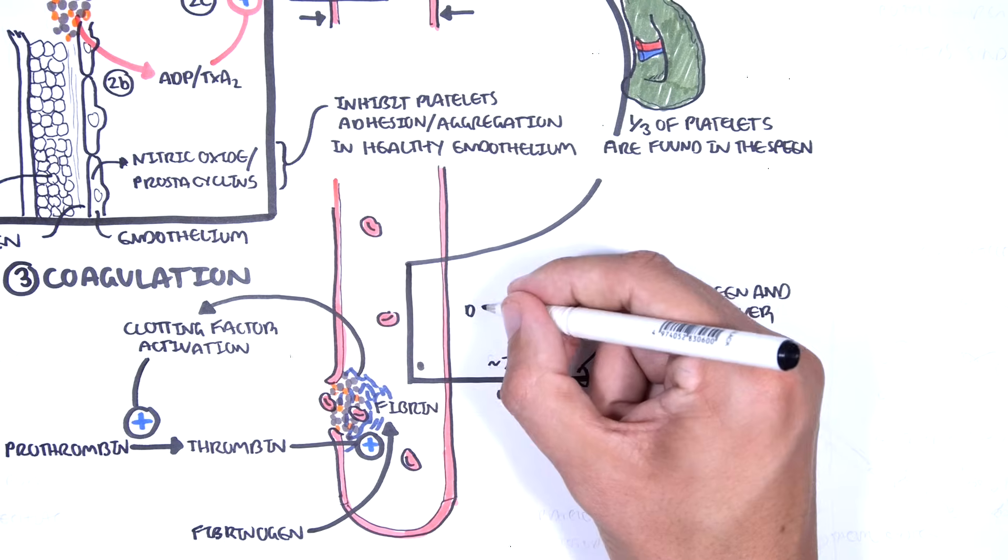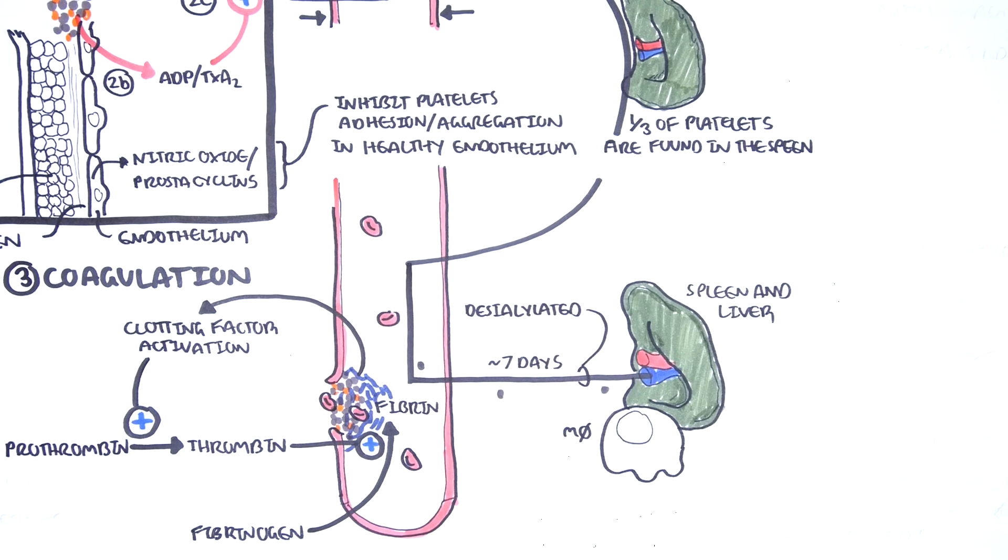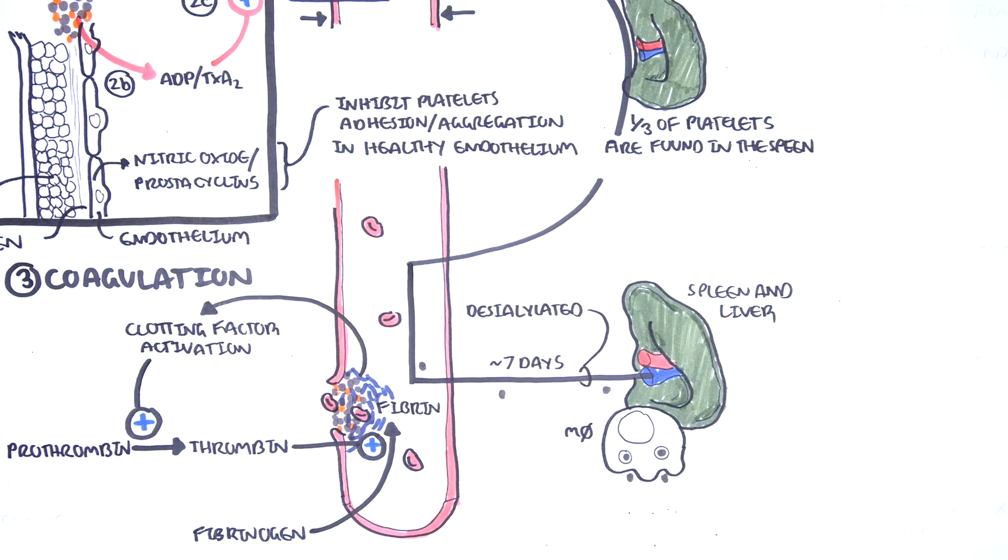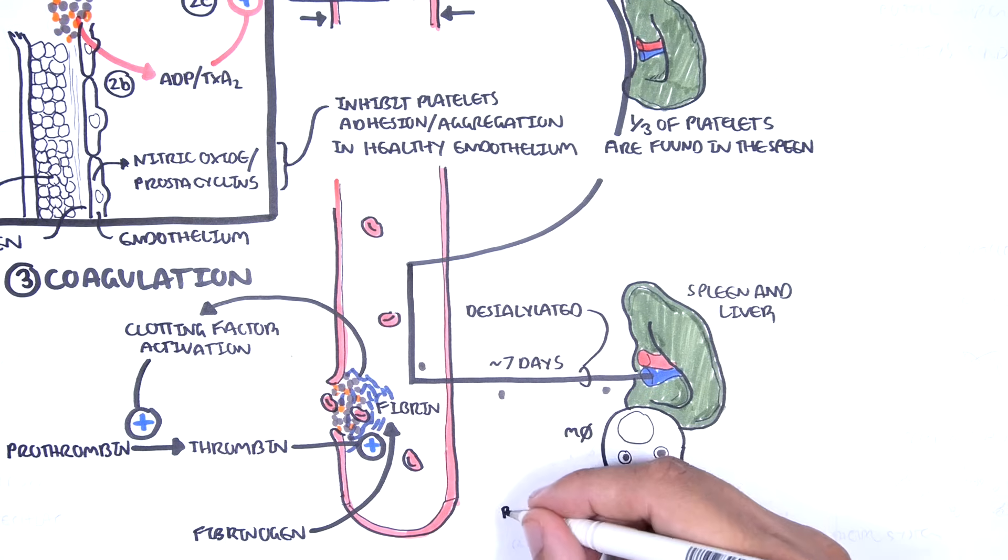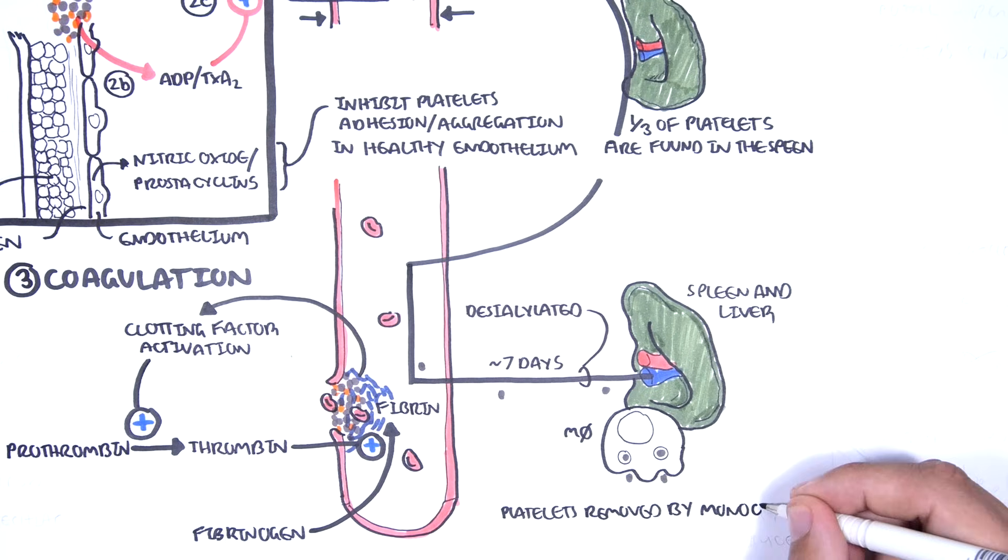The clearance of platelets occurs in the reticuloendothelial system, such as in the liver and the spleen. Platelets are removed by monocytes of the reticuloendothelial system, also known as the mononuclear phagocyte system.